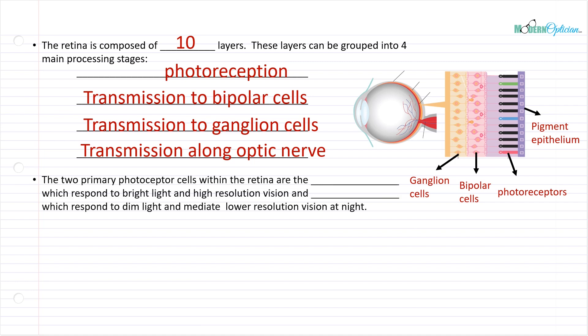The two primary photoreceptors within the retina are the cones, which respond to bright light and high-resolution vision, and the rods, which respond to dim light and mediate lower-resolution vision at night. The rods and cones are photoreceptors found in the pigment epithelium, and they are the ones that interact with the light that enters the eye.